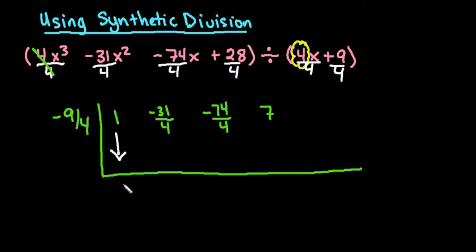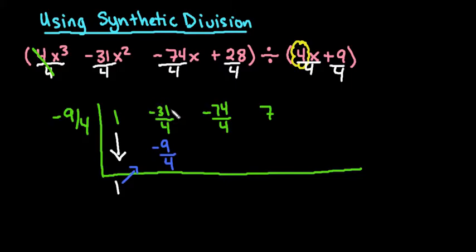The first step is to always bring down the first term, so we bring down the 1. Then we multiply: negative 9 fourths times 1 gives negative 9 fourths. Taking the top number — negative 31 — and adding negative 9 gives negative 40 divided by 4, which is negative 10.